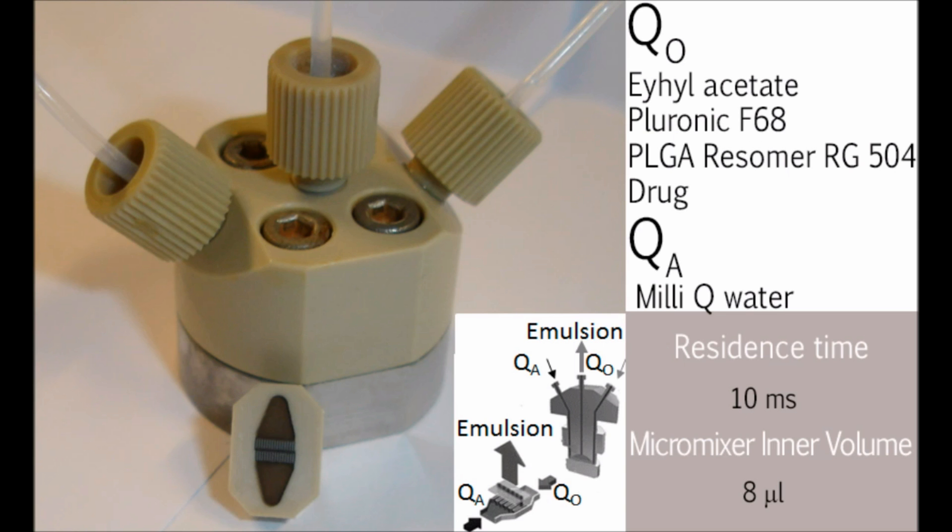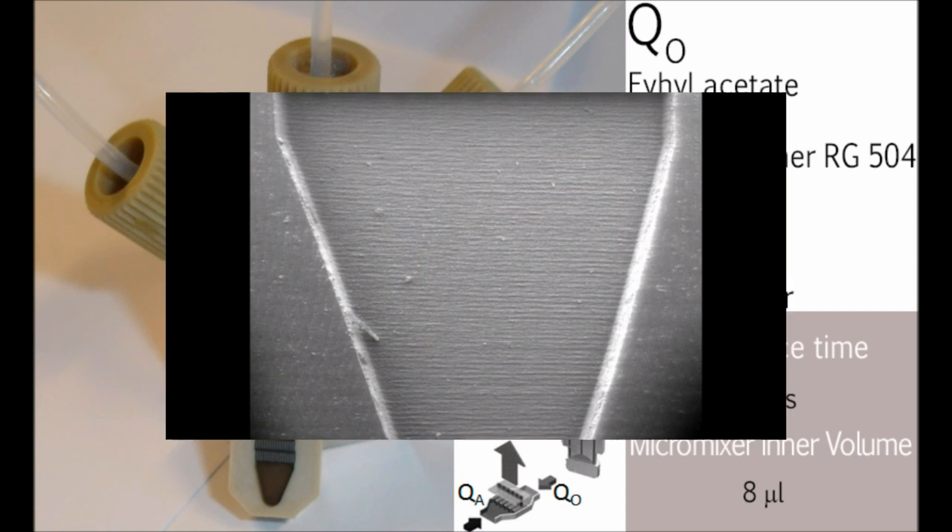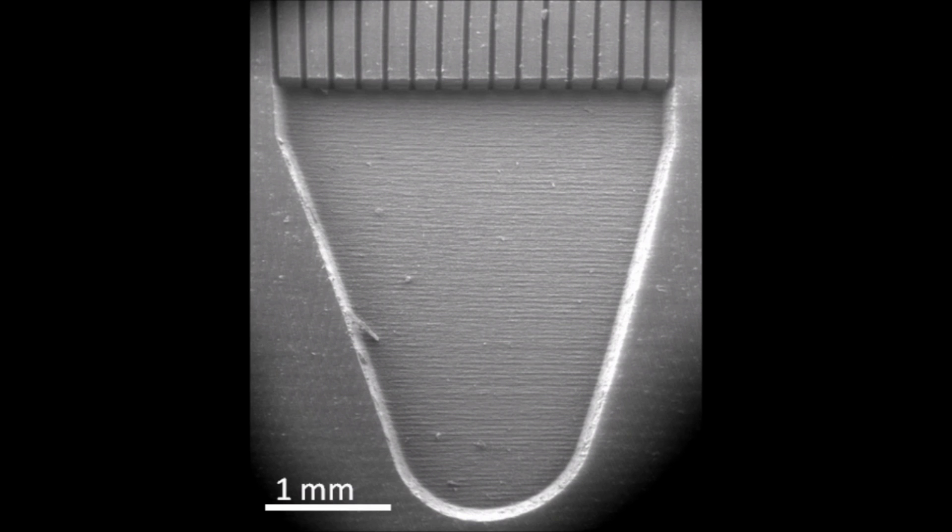Cyclosporine PLGA nanoparticles were prepared by using an interdigital micromixer by oil and water microchannel emulsification and solvent evaporation. As can be seen in the slit interdigital micromixer.